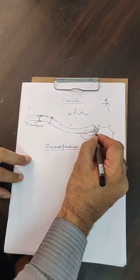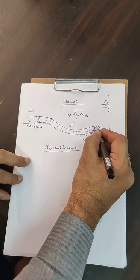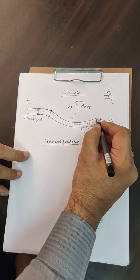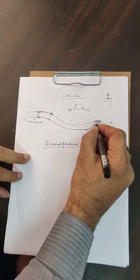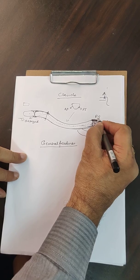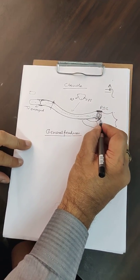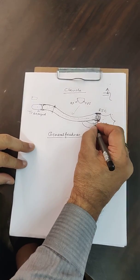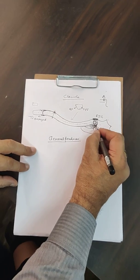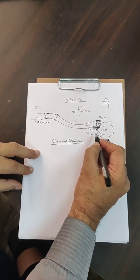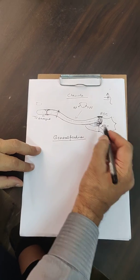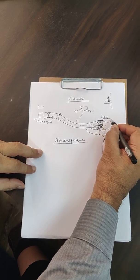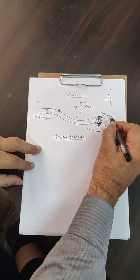Outside the meniscus there is the capsule, and this capsule is strengthened by the posterior sternoclavicular ligament, the anterior sternoclavicular ligament, the costoclavicular ligament, and the interclavicular ligament, which connects this clavicle to the other clavicle.